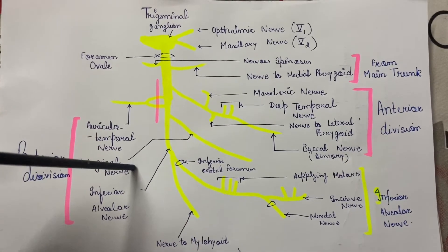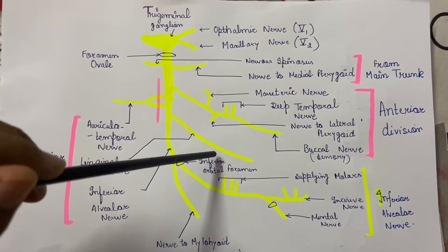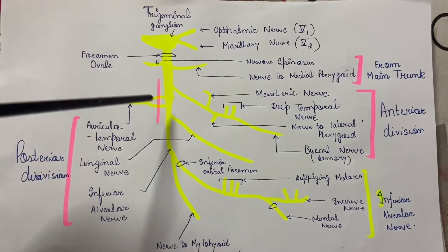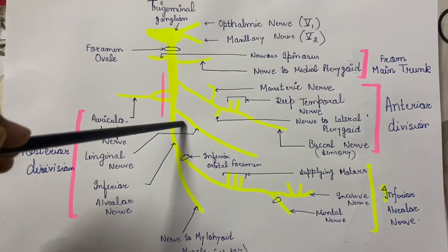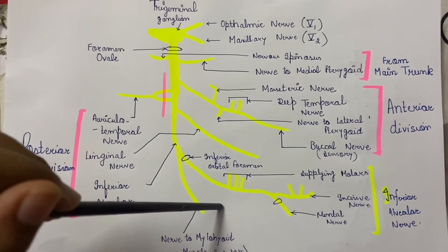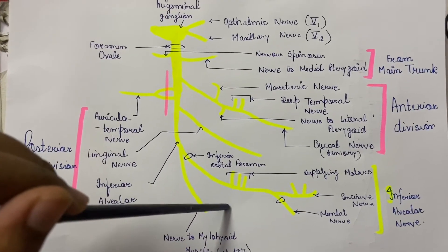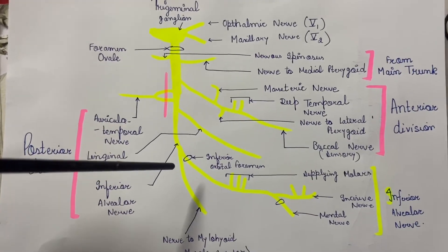Now the lingual nerve. This lingual nerve is a very short branch to which the submandibular ganglion hangs, and also the chorda tympani nerve, which is a branch of the facial nerve, joins to it to give the fibers that lead to the secretion of saliva from the salivary glands. We will discuss this in detail later.